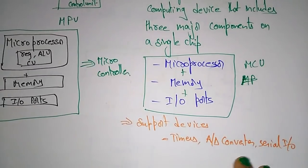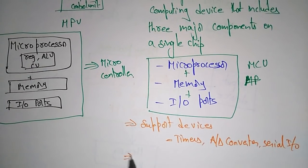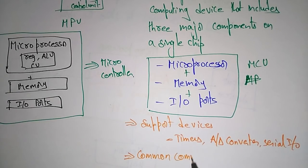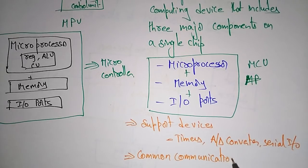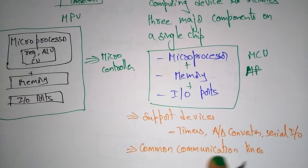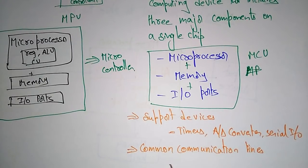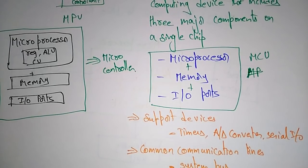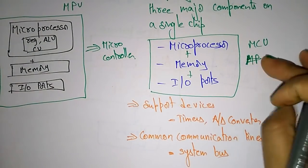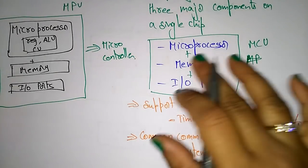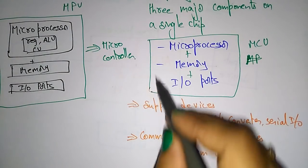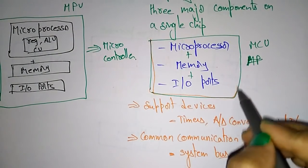The microcontroller also has common communication lines to connect each and every component in the microcontroller. These common communication lines are called the system bus. So these are the terms present in the microcontroller: a microcontroller unit integrated with three major components — microprocessor, memory, and input/output — on a single chip.